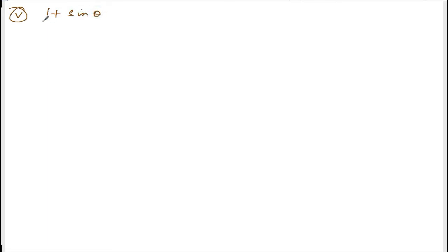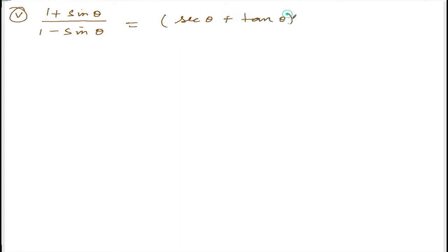Now we are doing exercise 10.2, question number 11, roman number 5. Let me write down the question. The question is: (1 + sinθ) divided by (1 - sinθ) which will be equal to (secθ + tanθ) whole square. Solution: let me take the left hand side.